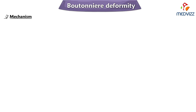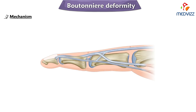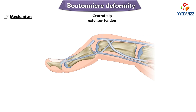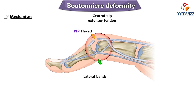So what is the mechanism of such a condition? Whenever there is a disruption or avulsion of the central slip extensor tendon and volar migration of the lateral bands of the extensor tendon mechanism, it results in proximal interphalangeal joint flexion and distal interphalangeal joint extension.